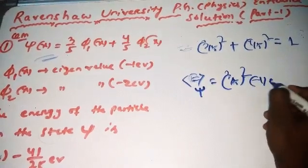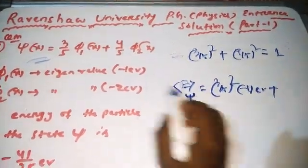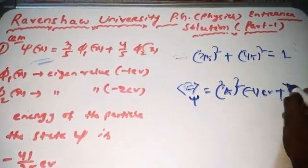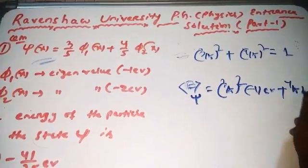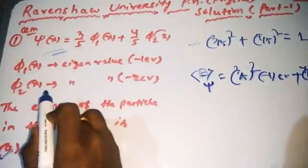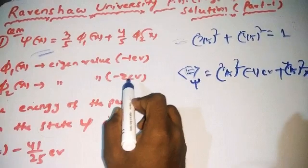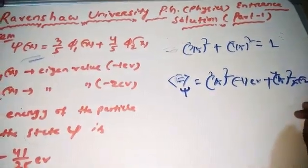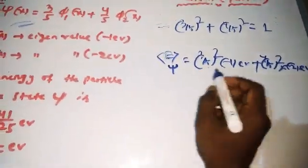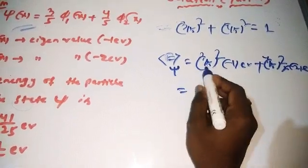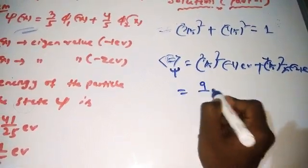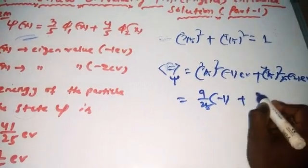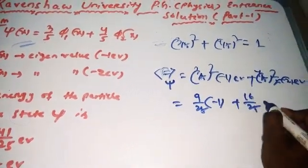The first eigenvalue is minus one electron volt. The coefficient of ψ₂ is 4/5, so (4/5)² whole square. The second eigenvalue is minus two electron volts. So the expected energy is: (9/25) × (−1) + (16/25) × (−2).